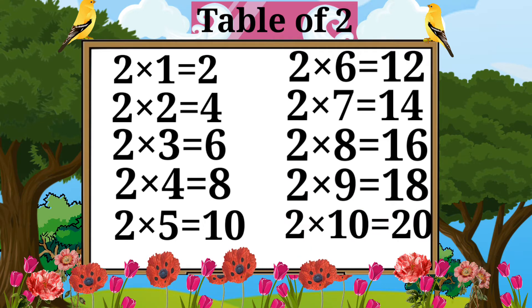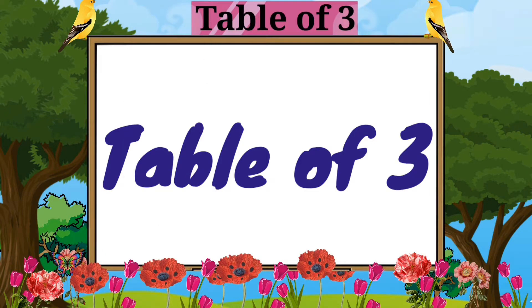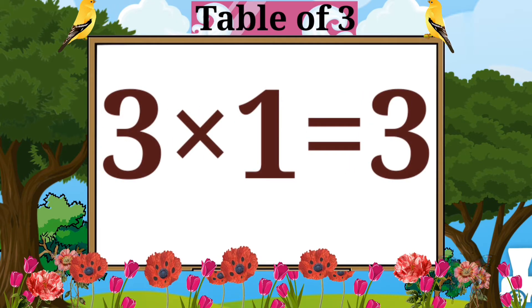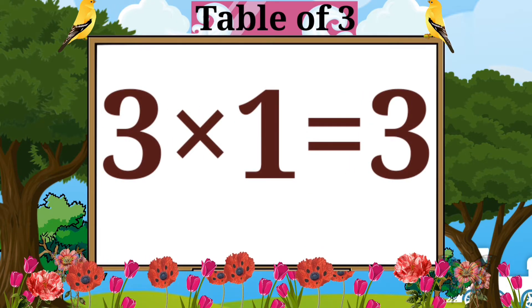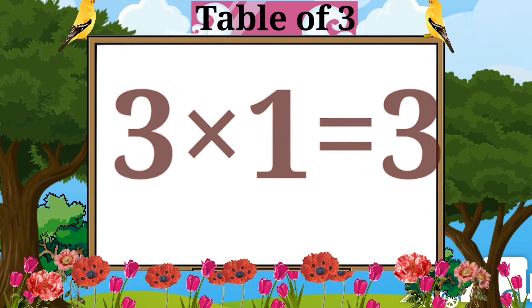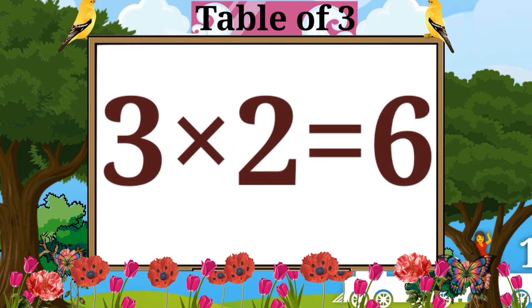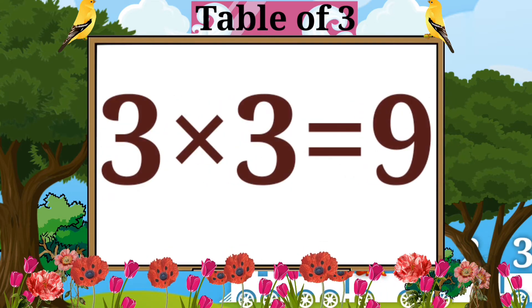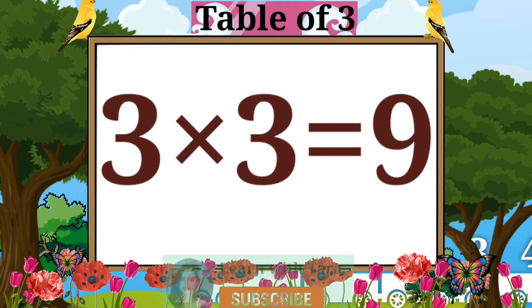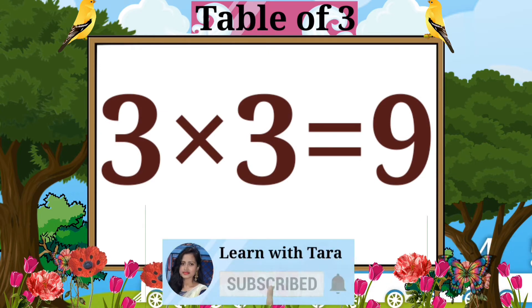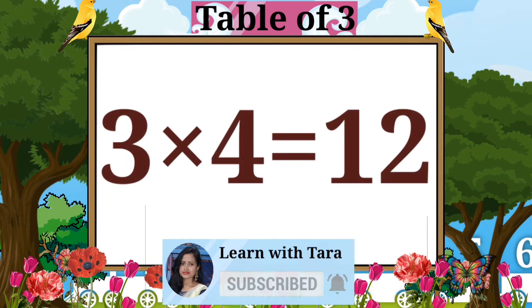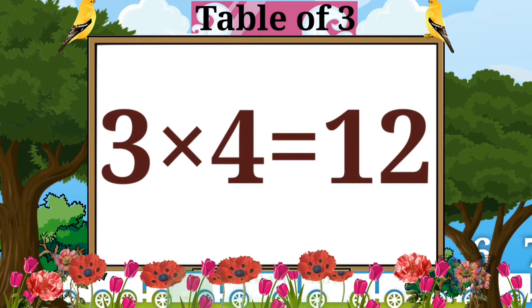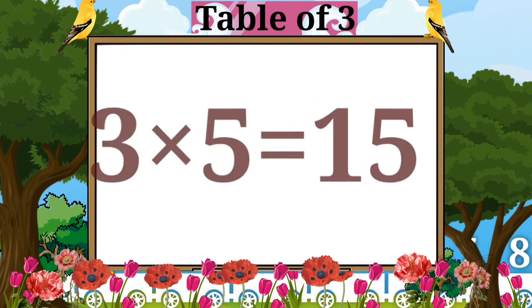Table of Three. Three ones are three. Three twos are six. Three threes are nine. Three fours are twelve.